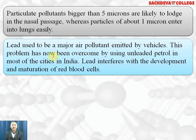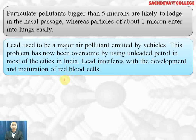Lead used to be a major air pollutant emitted by vehicles, but these days we are using unleaded petrol in India and have overcome this pollution to a large extent. Lead interferes with the development and maturation of red blood cells. But still in school buses we are using yellow paints which consist of lead chromate, and Chinese toys — particularly yellow colored ones — also contain lead salts or lead chromate, which is also a source of lead pollution.